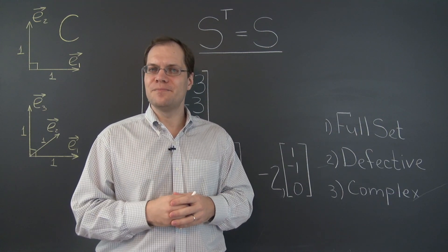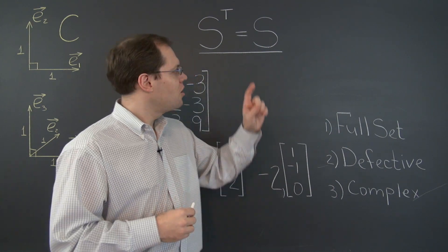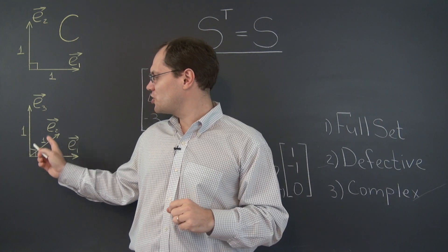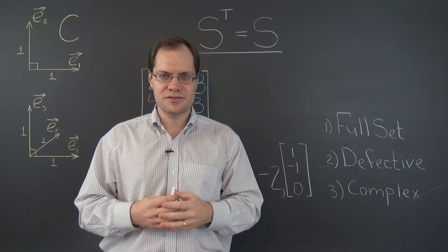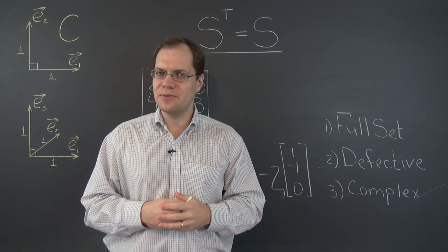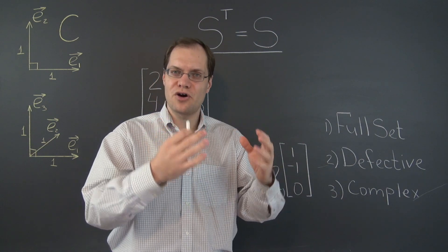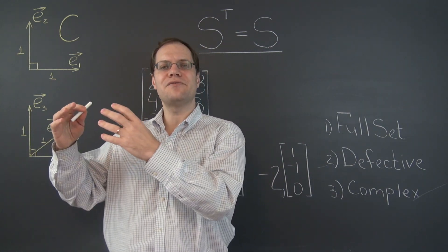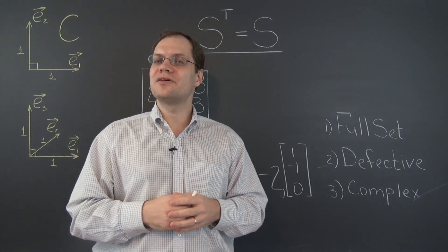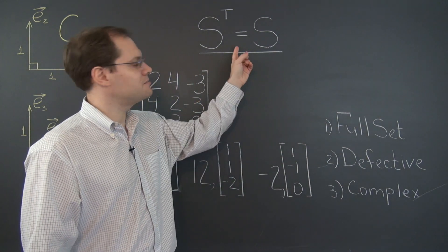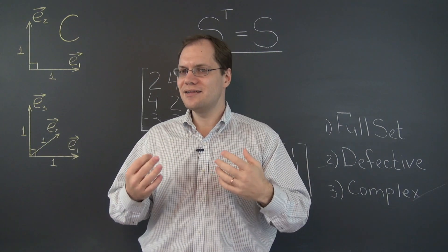In an earlier video, we demonstrated that an orthoscaling linear transformation is always represented by a symmetric matrix with respect to a Cartesian basis. This doesn't imply, of course, that every symmetric matrix corresponds to the kind of linear transformation that simply scales the space in some orthogonal directions. Just because every horse is an animal doesn't mean that every animal is a horse. So just because every orthoscaling linear transformation is represented by a symmetric matrix doesn't necessarily imply that every symmetric matrix represents a linear transformation like that.